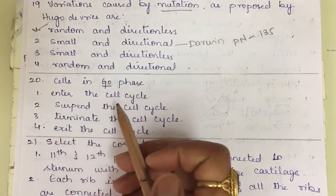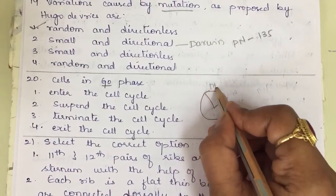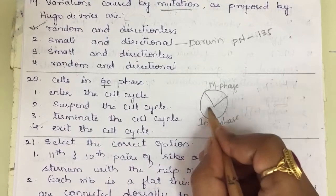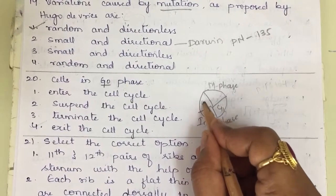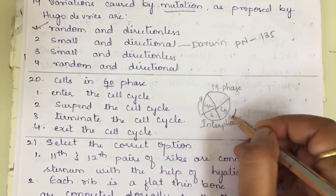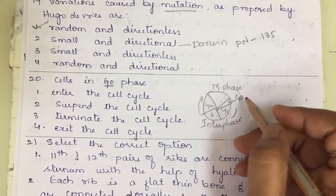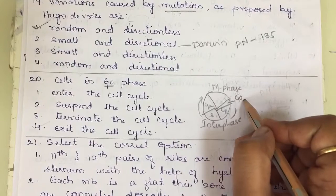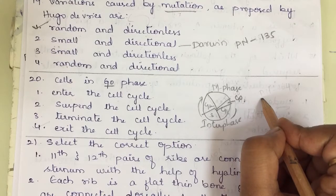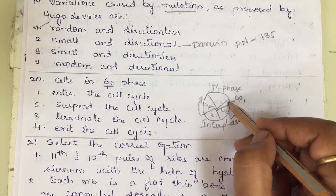Question 20: Cells in G0 phase. In the cell cycle, there are two major phases: M phase and interphase. Interphase has three sub-phases: G1, S, and G2. After cell division, some cells enter G0 phase, also called the cell cohesion phase. In G0 phase, cells rest and proceed with differentiation to become tissues and organs. These cells can either enter the next cell cycle or remain in G0 phase.